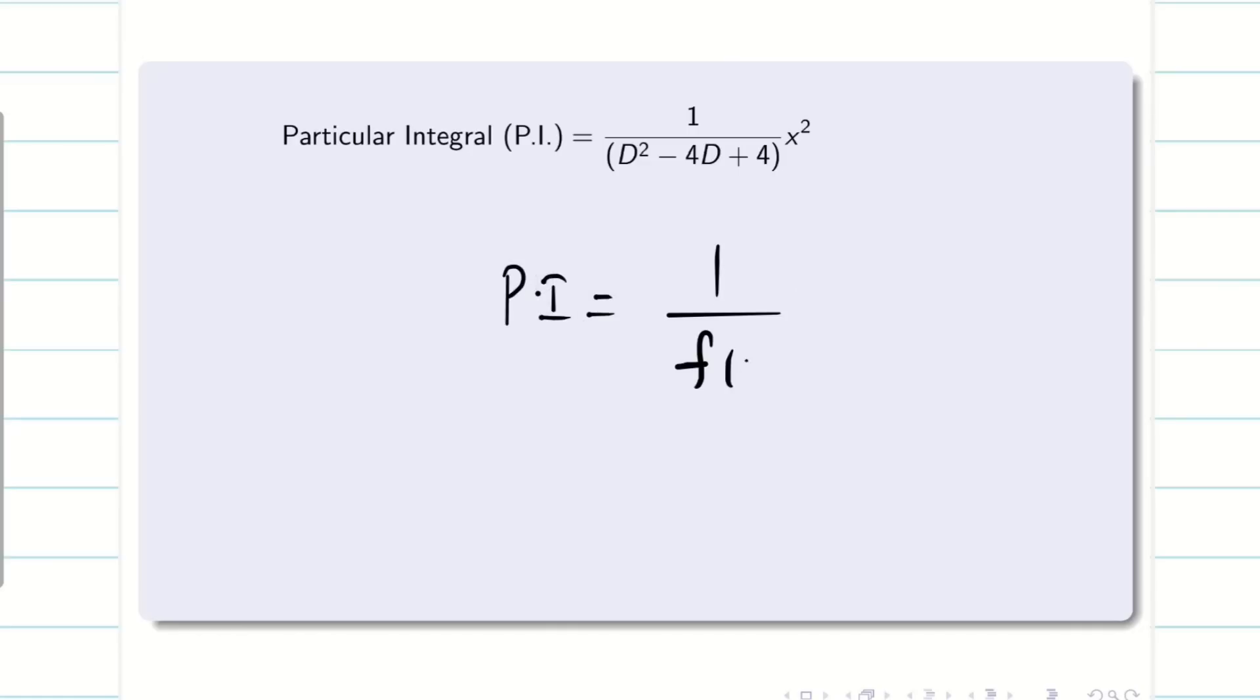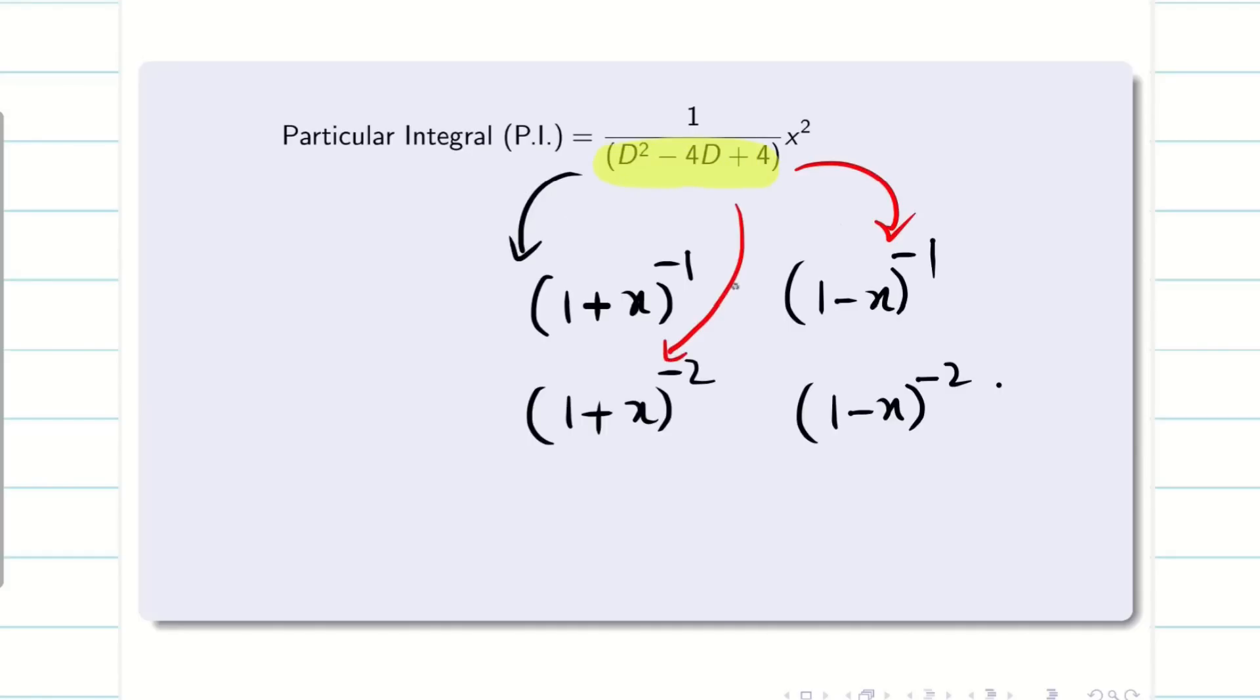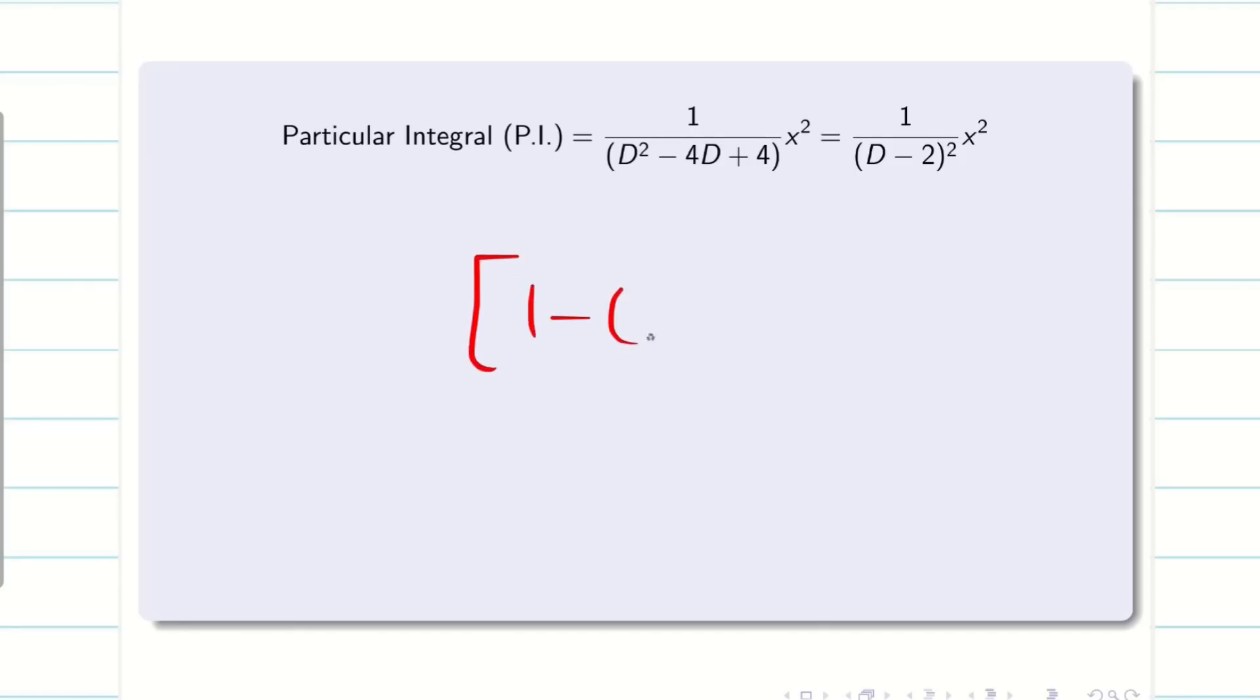Next, we are going to find the PI. PI is 1 by f of d times x power m. In our problem, we have x square. We have to convert our denominator in any of the formats. This problem luckily is going to be real and equal root, so I can write this as d minus 2 whole square. But I want something 1 minus whole power minus 2. To achieve this, I write this as 2 minus d whole square times x square. We know that a minus b whole square or b minus a whole square both are same. Now, I will take this 2 outside. It will become 1 minus d by 2 whole square times x square.